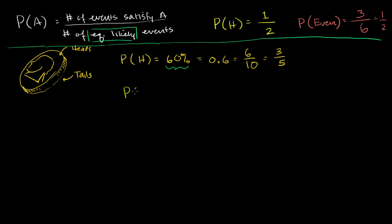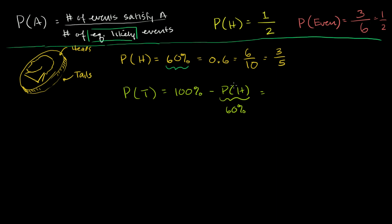If the probability of heads is 60%, the probability of tails — well, there are only two possibilities, heads or tails. So the probability of heads or tails equals one, because you're going to get one of those two things. You have a 100% chance of getting heads or tails, and these are mutually exclusive events — you can't have both. So the probability of tails is 100% minus 60%, which is 40%, or 0.4, or 4 tenths, or 2 fifths.